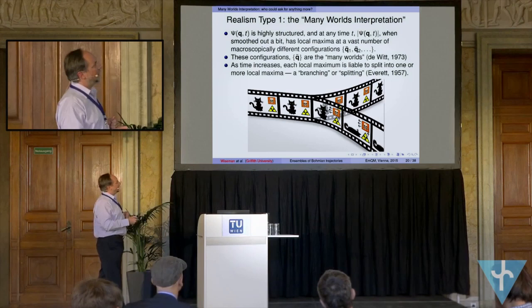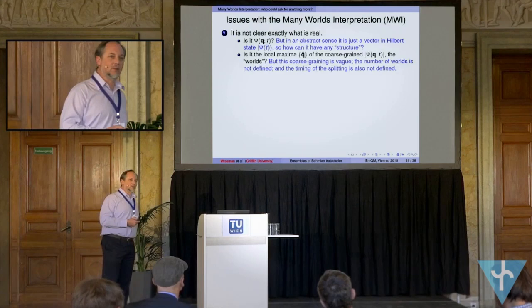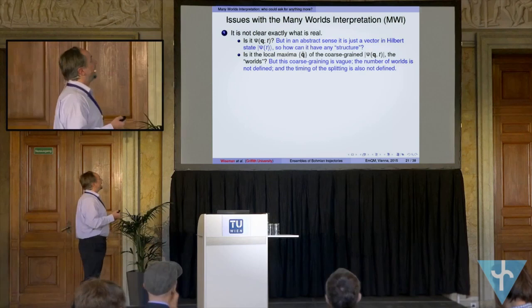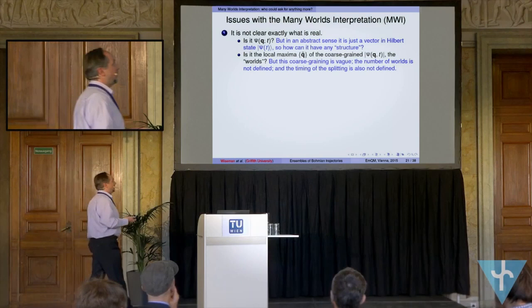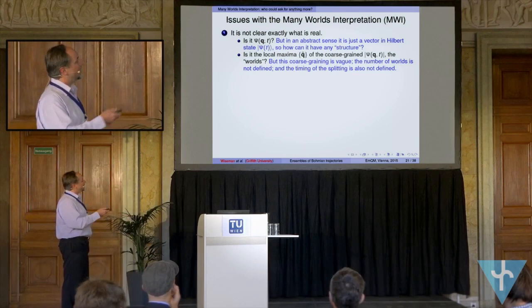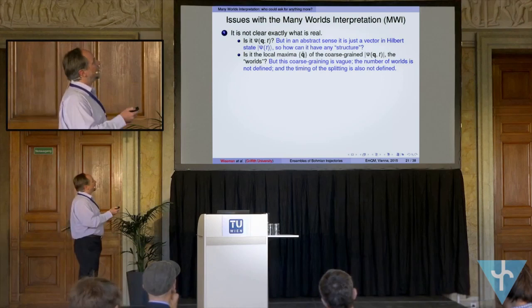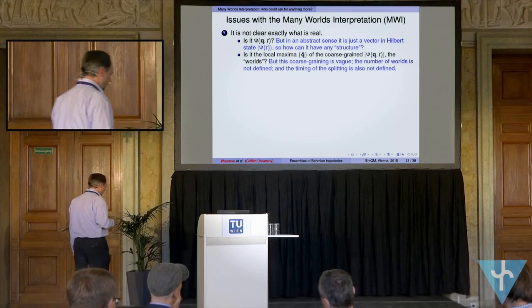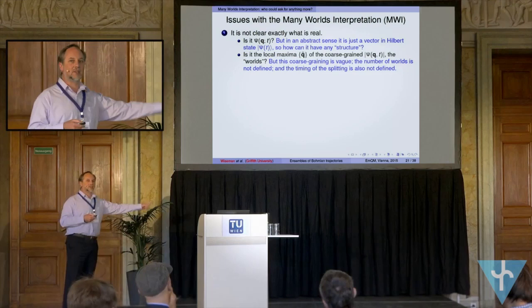And so this is a cartoon of Schrödinger's cat splitting into the live and the dead branches here. It's a valid interpretation to say that's real, so why not just go with that? I think there are a number of issues which can be raised. First, it's not clear exactly what you're saying is real, and I think different adherents to the many-worlds interpretation actually have different answers. If you say that it is the wave function that's the thing that's real, well then you have the problem that in some sense that wave function can just be represented by a vector in Hilbert space.